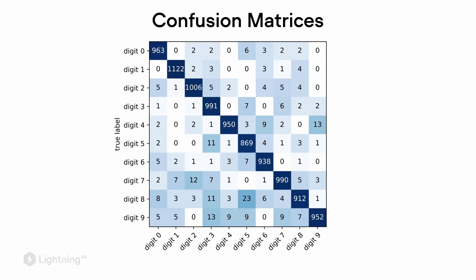Another useful way to evaluate our models is using confusion matrices, which we introduced earlier. In a confusion matrix, we see the number of predicted cases for a particular class versus the number of actual cases. In this confusion matrix, we want to maximize the scores along the diagonal.